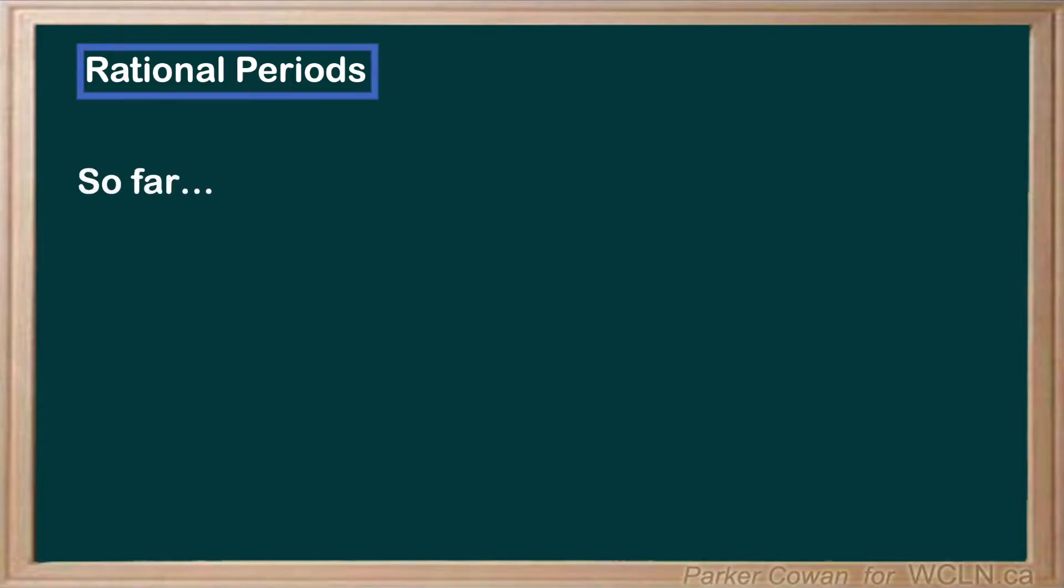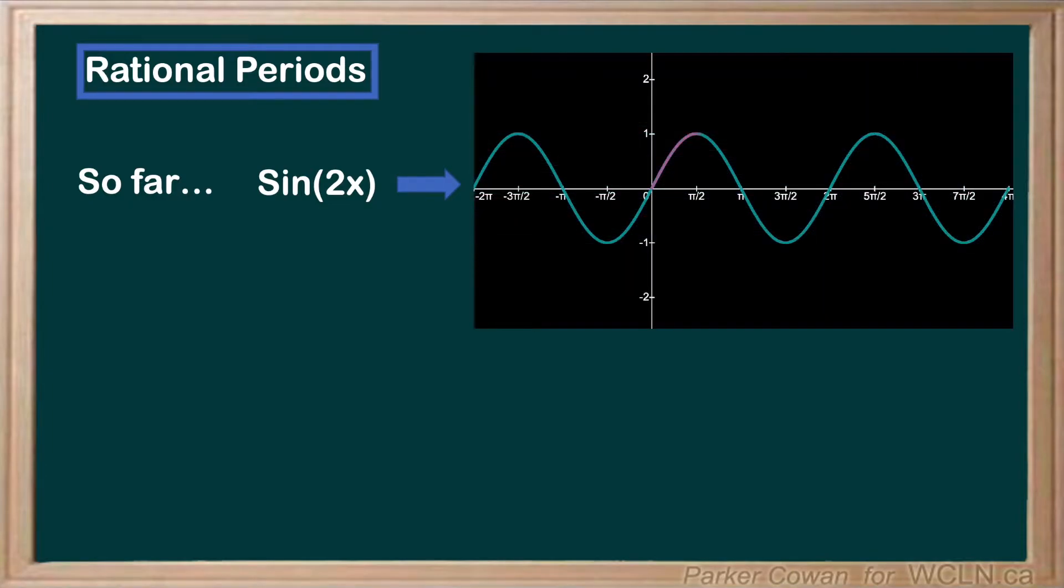Rational periods. Thus far, we have only calculated periods that have been a factor of pi. We call this an irrational number because pi itself is irrational.